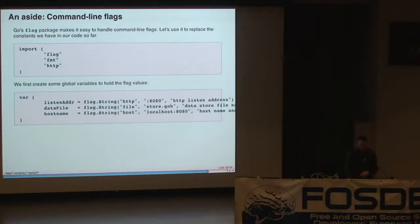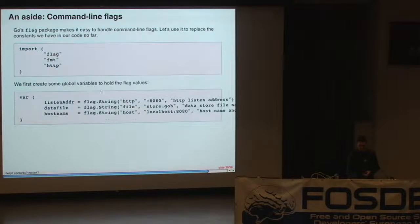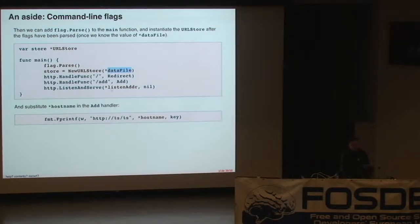There are a lot of magic numbers and constants in this program. I want to replace them with command line flags. I can import the flag package and set up a bunch of global variables. The one thing I have to be sure to do is call flag.Parse at the start of my main function to actually read the command line options and set the global variables to their respective values. I need to move my initialization of newURLStore into the main function so that I can refer to my now-passed command line flag. Similarly, we update the listen address and the hostname in the add handler.